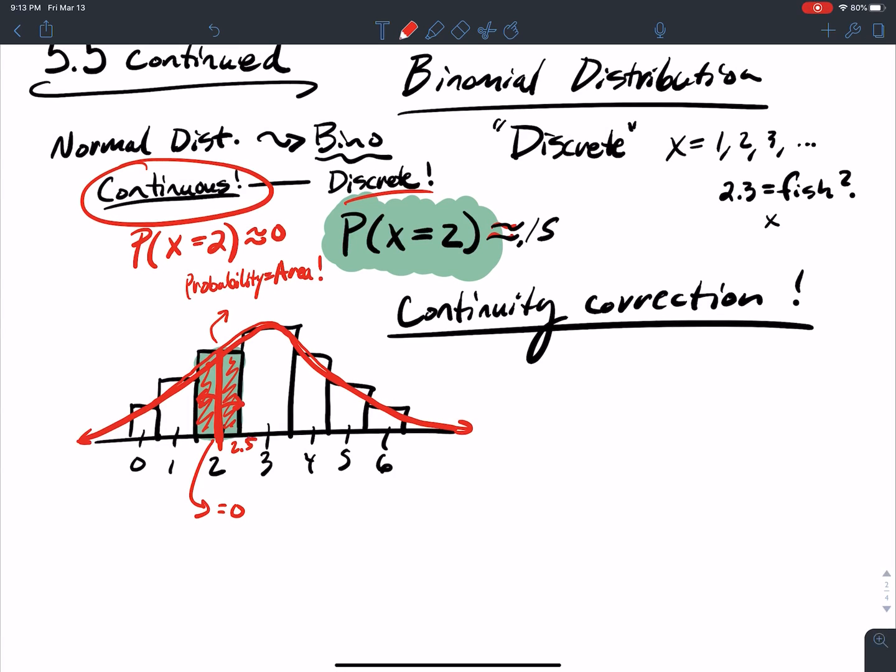So I go from 2.5 this way, and 1.5 this way. So my probability that x equals 2 becomes the probability that x is between two values, between that 1.5 and 2.5. And this is the continuity correction here at a single value.